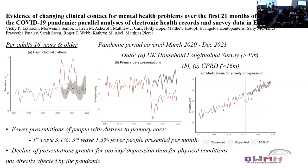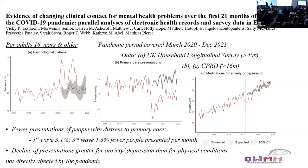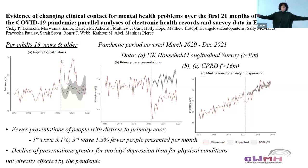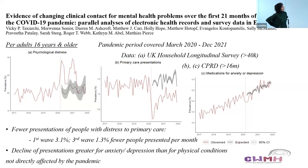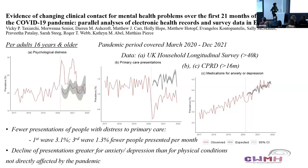Our next speaker is Vicky Taxiarchi from the University of Manchester. Hello, my name is Vicky Taxiarchi. I'm from the University of Manchester at the Centre for Women's Mental Health. I'm going to talk about the effect of COVID-19 on anxiety and depression levels in the English adult population. We covered the period up to the end of 2021, and we performed pattern analysis using survey data measuring the psychological distress of participants, and primary care health records measuring presentations for symptomatology of anxiety and depression and medication prescriptions.